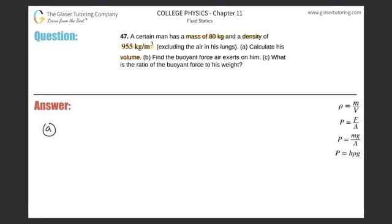This is pretty straightforward. All we have to do is use the density equation over here. The density of the man equals the mass of the man divided by the volume of the man. And if we're asked to calculate the volume, we mathematically manipulate this so that the volume of the man equals the mass of the man divided by the density of the man. Here it is, just plug it in. Simple.